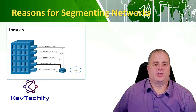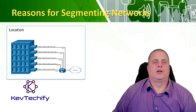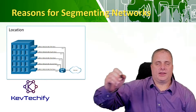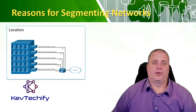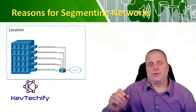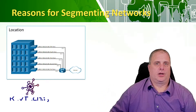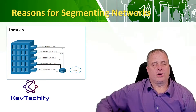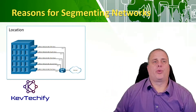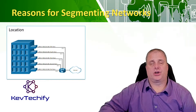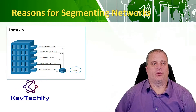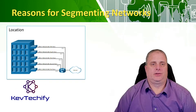One reason for segmenting is location. For example, each floor in a building can be a different local area network, keeping all traffic at that floor and not interfering with others. Location could also mean buildings — the first building has the first network, the second building has the second. Or maybe one local network per office: an office in Chicago, an office in New York, an office in LA — each one has a different network.